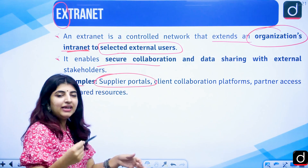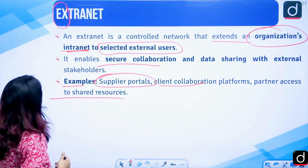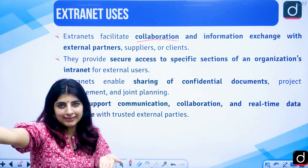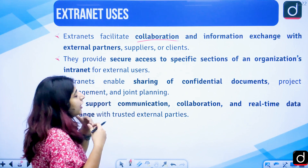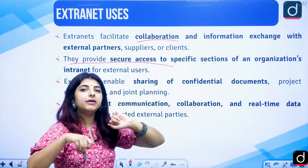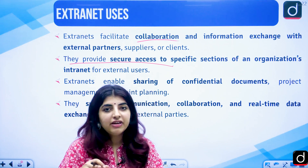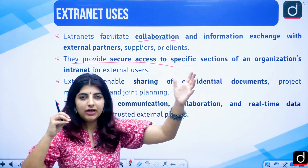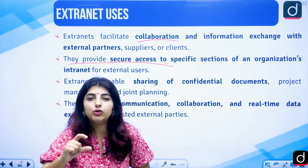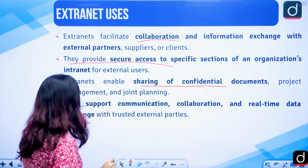Examples of extranet include supplier portals, client collaboration platforms, and partner access to share resources. Uses include: collaboration and information exchange with partners and people outside your organization, maintaining suppliers and clients. It provides secure access to specific sections — even if a person comes through the extranet network and gets access to certain documents, they will not be able to access the entire organization's documents, only the selected authorized portion. Sharing of confidential documents and project management with joint planning can also take place here.